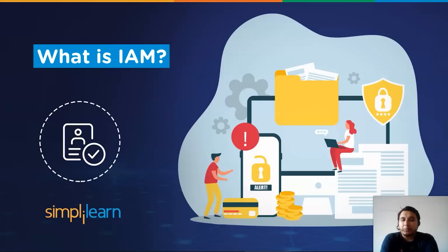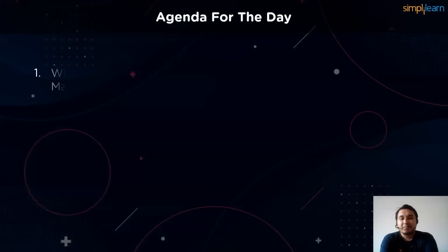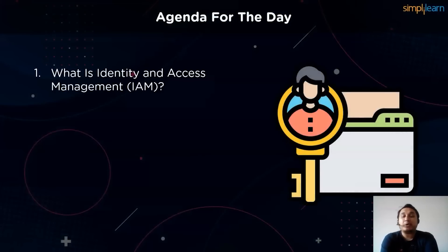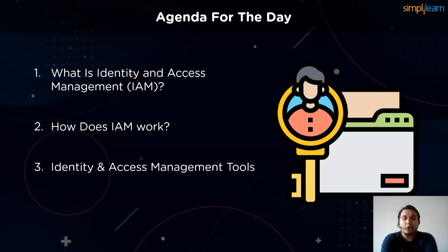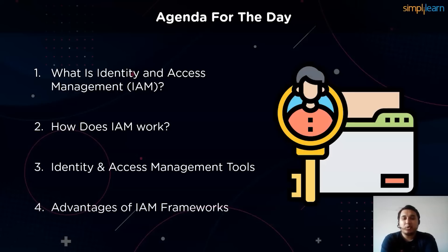Let's take a look at some of the topics to be covered today. We start by learning about IAM — Identity and Access Management — from a surface level, so as to put a clear idea of what it is. Next, we cover the general workflow and process of how IAM works. Moving on, we cover some of the tools that find their place in an IAM framework and are crucial components. Finally, we go through some of the advantages of IAM, learning what makes them a lucrative deal for organizations.